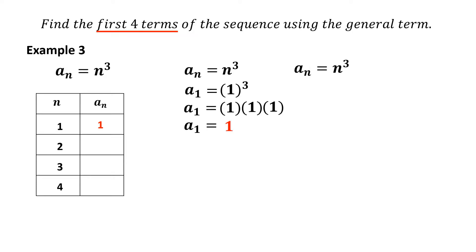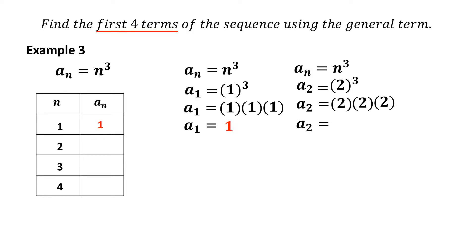Finding the second term using a sub n equals n cubed. Substitute n equals 2: a sub 2 equals 2 cubed, meaning 2 times 2 times 2, which equals 8. Therefore, the second term of the sequence is 8.